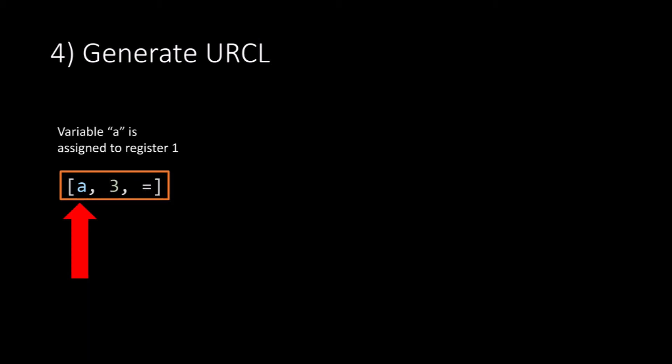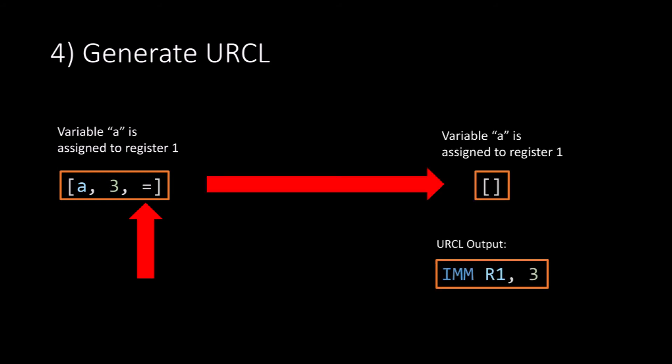Then we can start again. We first look at the first token, that is a, that is a variable, so we skip it. Then we look at the next token, which is a constant value of 3. Again, we skip that. Then we see an equals symbol. This is a maths symbol, so we generate the appropriate URCL code for that maths symbol. In this case, immediate r1 3. Then once we've done that, we remove the tokens from the list. In this case, it gives us an empty list.